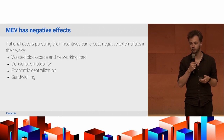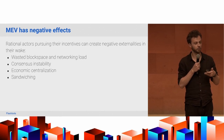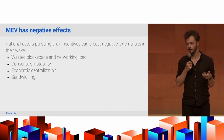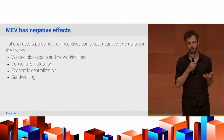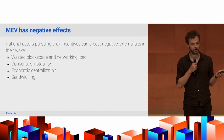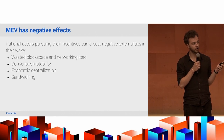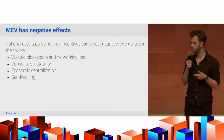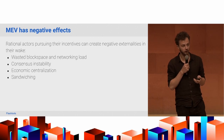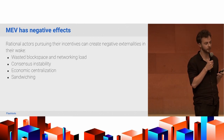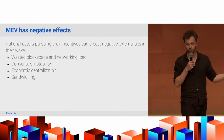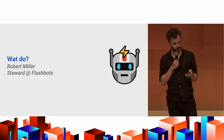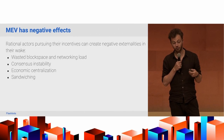The second idea: MEV has negative effects. Rational actors pursuing these permissionless commitments will create negative externalities if you don't deal with it appropriately. That's things like priority gas auctions, spam, latency wars that lead to wasted block space and network load. At the limit, it can destabilize consensus itself, which is where MEV began with Flash Boys 2.0 — economic centralization of validators integrating with trading firms, sandwiching, and so on.